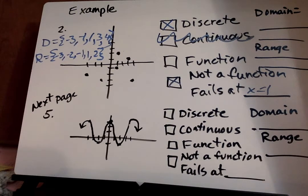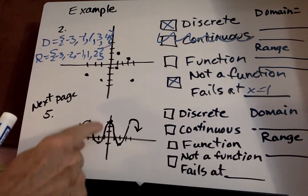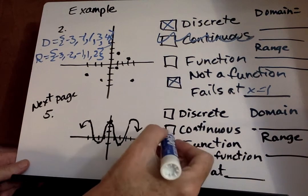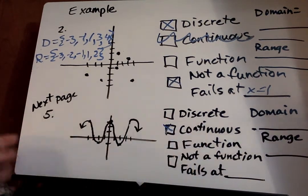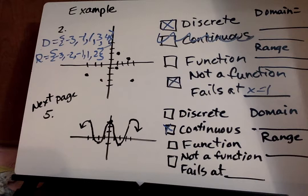So let's go on to page 46 and do number 5 right here. Whether it's discrete or continuous. What do you think? That's correct. See how these are all connected. If it makes any type of curve or line, it's continuous. Now we need to find out if it's a function or not a function.